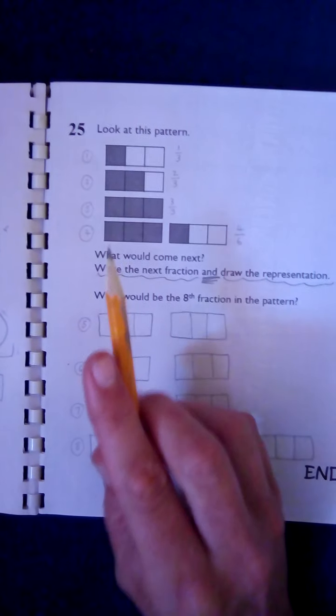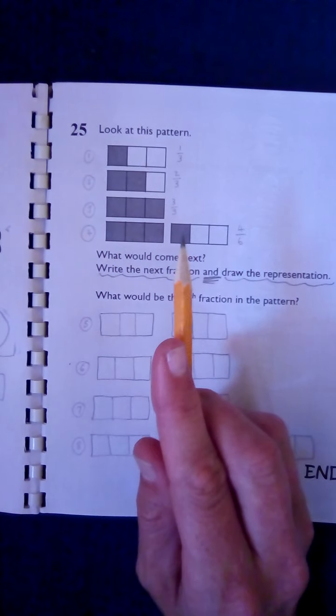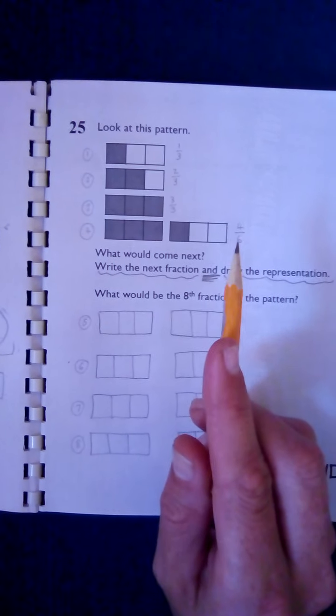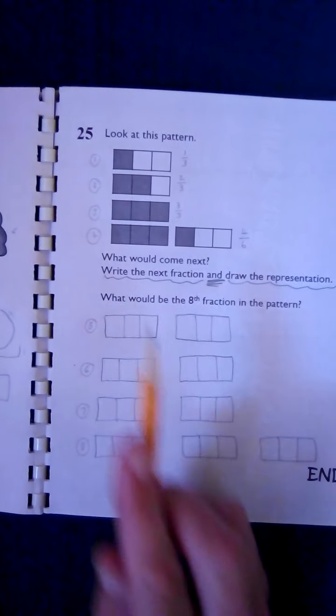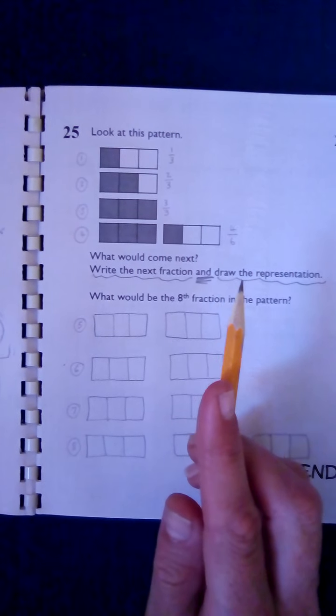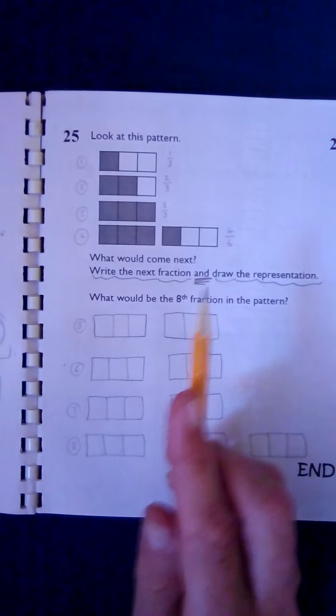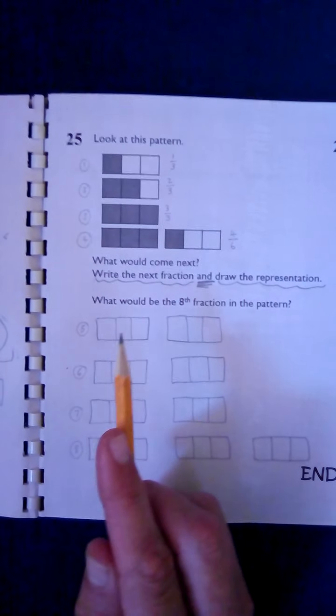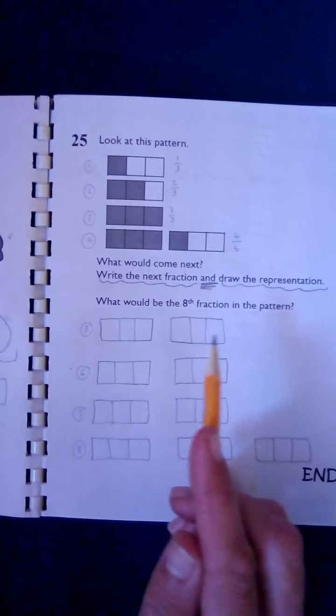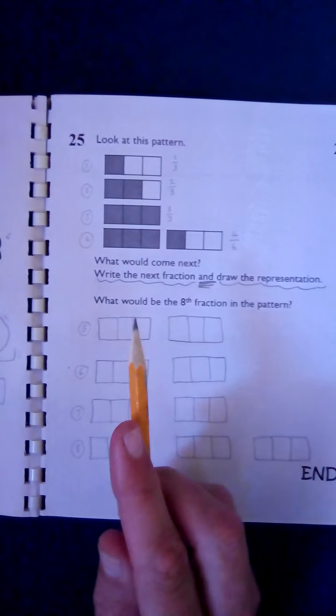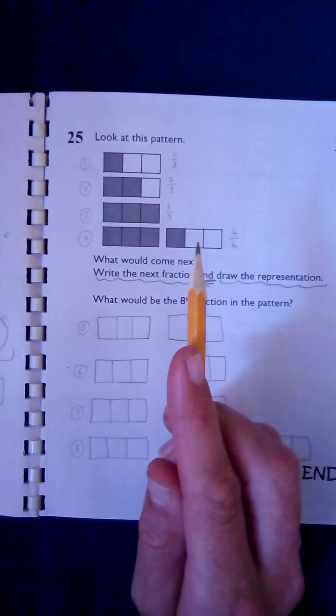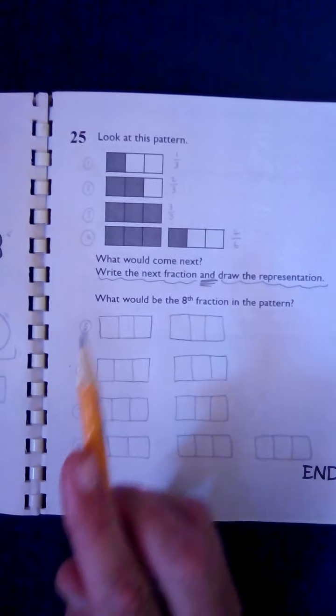Of how many in total? One, two, three, four, five, six are shaded. So write the next fraction and draw the representation. So this would be your next one. You would have to set it up like this, but I want you to show me what would be the next one that we shaded in and shade them all in here.